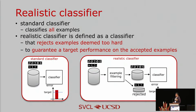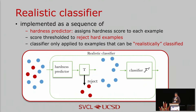For common standard classifiers, they try to classify all examples no matter how hard they are. In this paper, we define a new type of classifier called a realistic classifier, which can reject examples deemed too hard and guarantee a target performance on accepted ones. A possible implementation is: first, train a hardness predictor to assign a hardness score to each example; then threshold hard examples according to a pre-chosen threshold T, rejecting examples with larger scores; finally, train a classifier on the remaining examples.